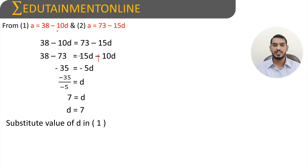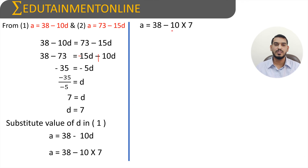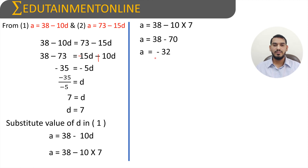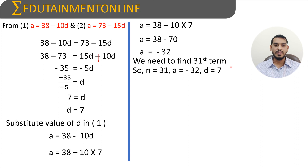Substituting the value of d = 7 into equation 1, which is a = 38 - 10d, we get a = 38 - 10 × 7 = 38 - 70 = -32. Now we have both a and d, and we need to find the 31st term of the AP.